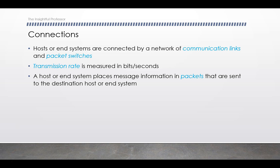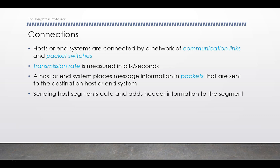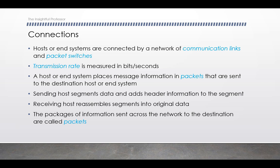A host or end system places a message in what are called packets that are sent to the destination host or end system. The sending host may find it necessary to segment the data — break it into smaller pieces — in order to transmit it across the network. In addition to the data payload, header information describes the data content, who's sending it, who's receiving it, and other information similar to what we'd put on an envelope. The receiving host takes these segments, reassembles them, and constructs the original data sent by the sending host. These packages of information sent across the network are referred to as packets.